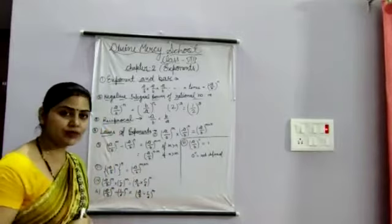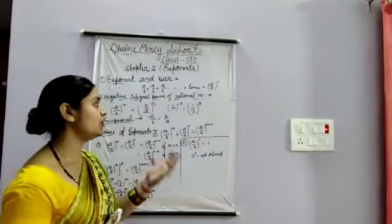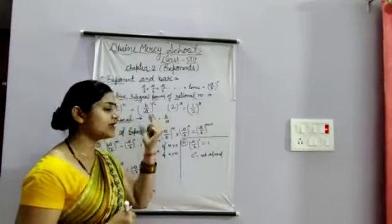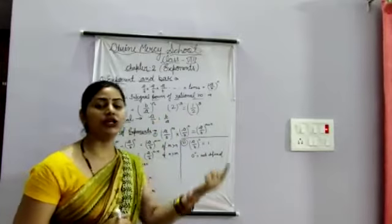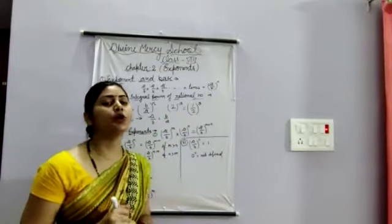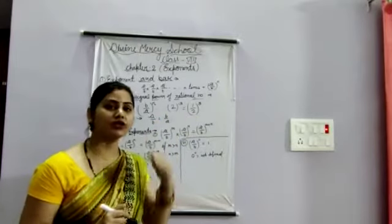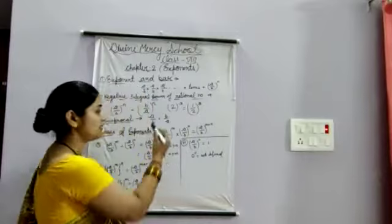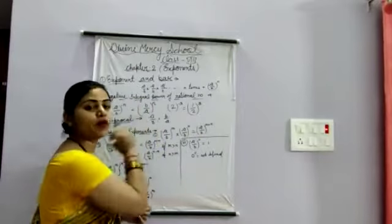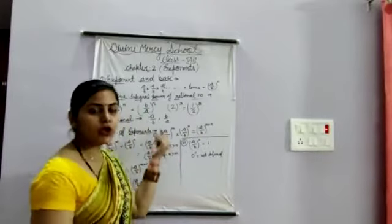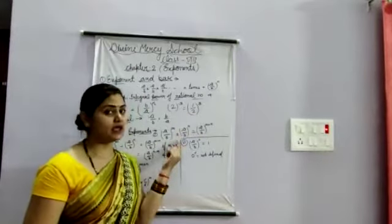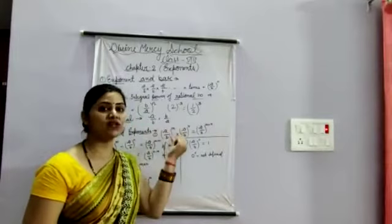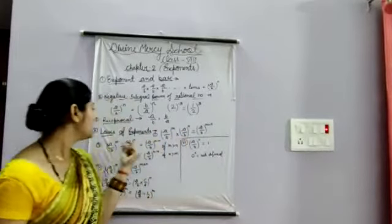Reciprocal means changing the numerator to the denominator and the denominator to the numerator. For example, if A upon B is there, we write B upon A — that is the reciprocal of A upon B.